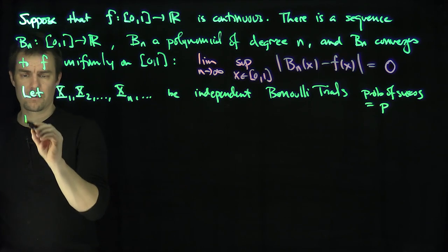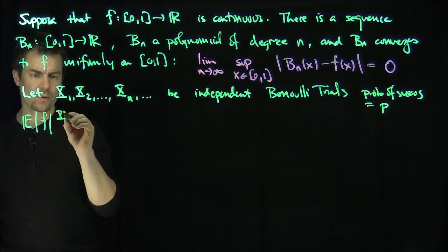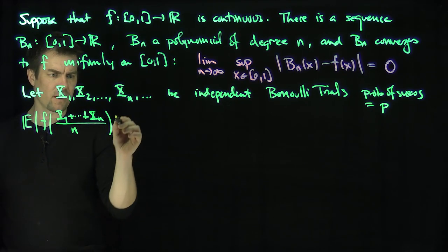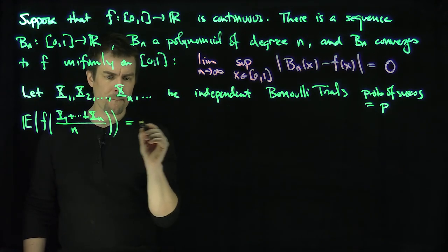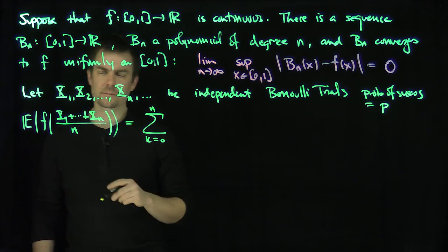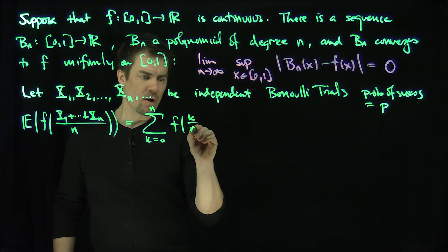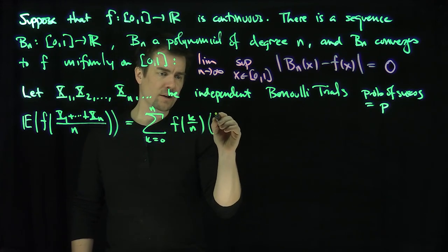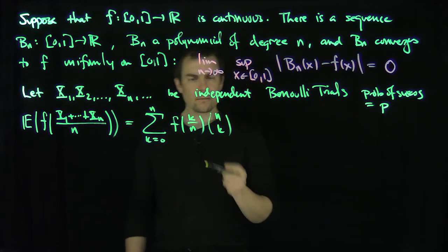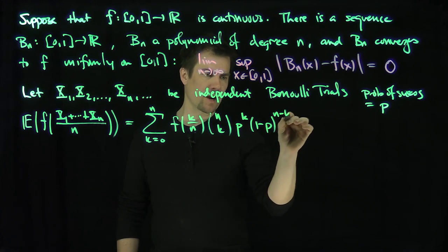Then let me compute the expected value of f of (x1 + ... + xn)/n, the average value of these things. So what's this going to be? This k goes from 0 up to n of f(k/n). Well, how could these random variables sum up to be k? There's n choose k ways of those things.